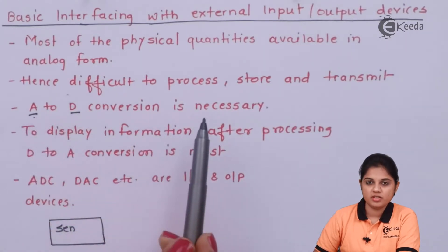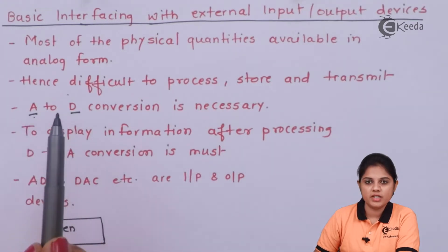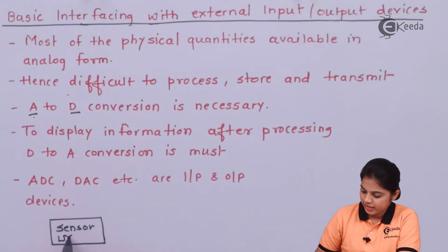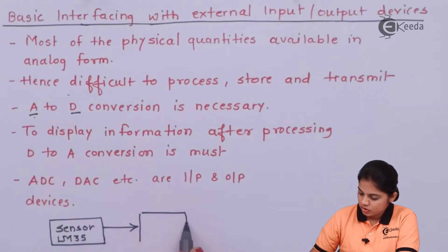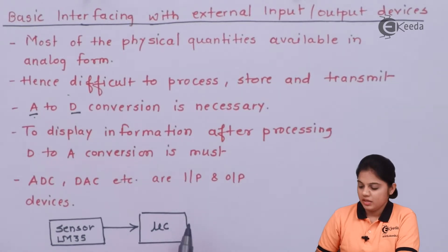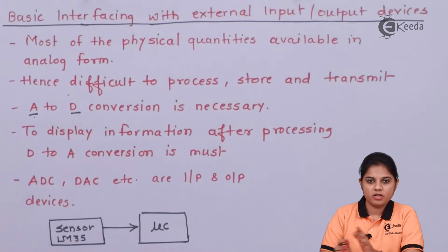Since data is available in analog form, it is difficult to process, store, and transmit. Hence we require A-to-D conversion, where A stands for analog and D stands for digital. Let's see a simple block diagram: we have a sensor — take the example of LM35 — which will measure the temperature. This temperature value is sent to the microcontroller block, where an appropriate program is stored and will evaluate whether the temperature is proper or not.